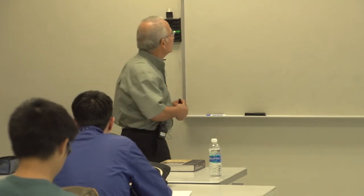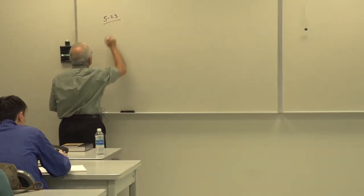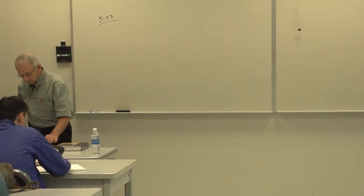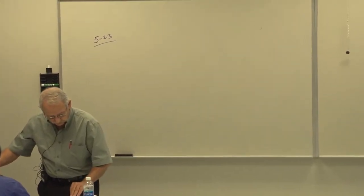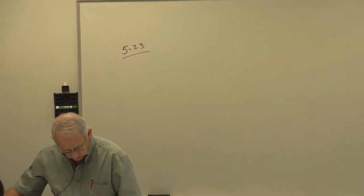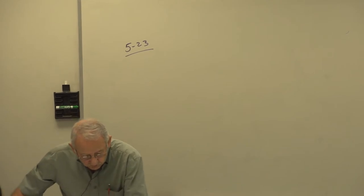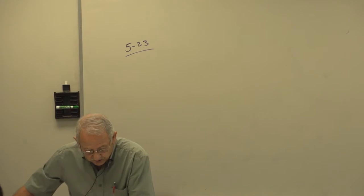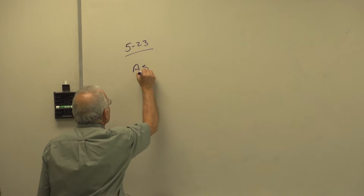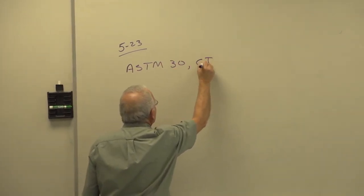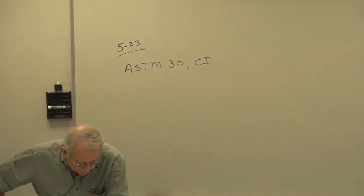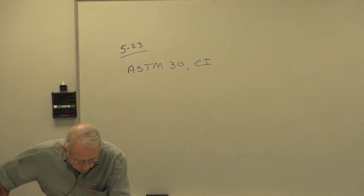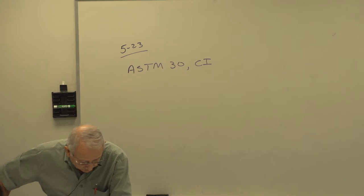We did some example problems. Let me do one more example problem — problem 623. Find the factors of safety using the brittle Coulomb-Mohr and modified Mohr theories. Plot the failure diagram in the sigma A, sigma B plane to scale and locate the coordinates of the stress state. Estimate the factors of safety from the two theories by graphical measurements along the load line.